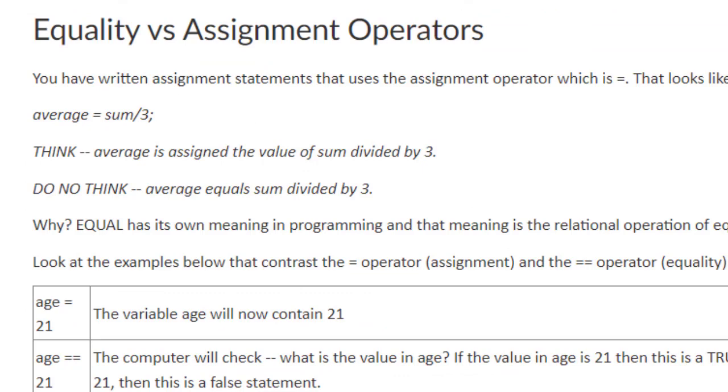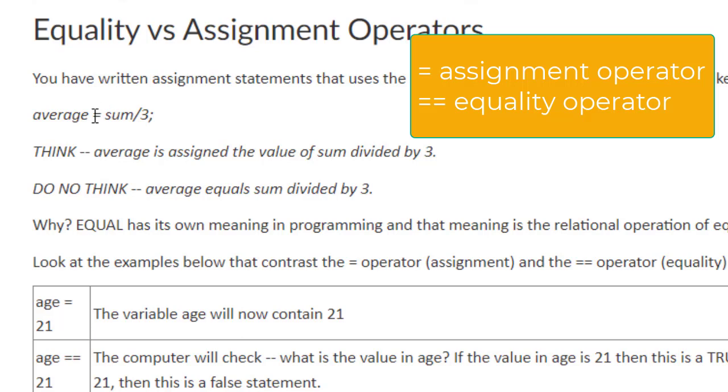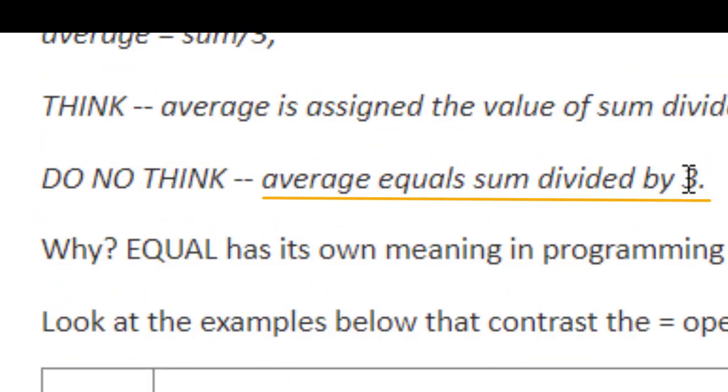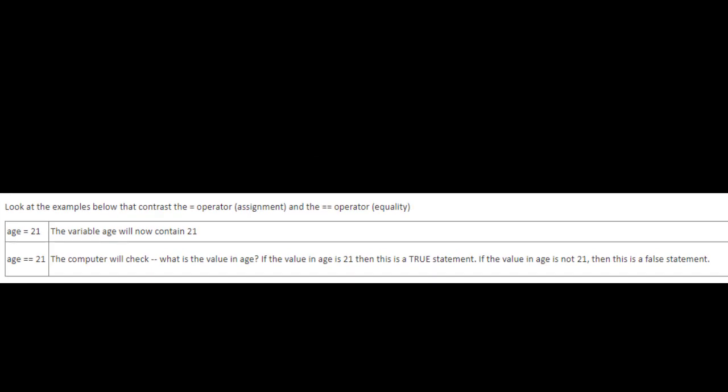Let's talk about why we're using two equal signs in Java for equality. As you know, the equal sign is used as the assignment operator. What you should be thinking when you see this statement is: average is assigned the value of sum divided by 3. There does not have to be anything in average to do this. There does have to be something in sum. When you're doing an assignment, always start on the right-hand side, calculate the value, and then assign it to the variable on the left-hand side. By the way, that's the only thing you can have on the left-hand side of an assignment statement: a variable. Do not think average equals sum divided by 3. Think average is assigned the value of sum divided by 3.